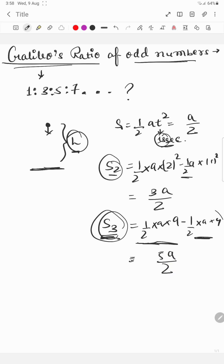Now the ratio we can see is s1 is to s2 is to s3, which equals 1 is to 3 is to 5. This is what Galileo's ratio is.